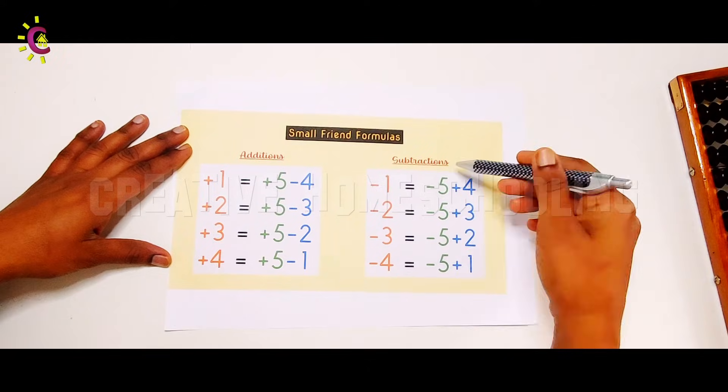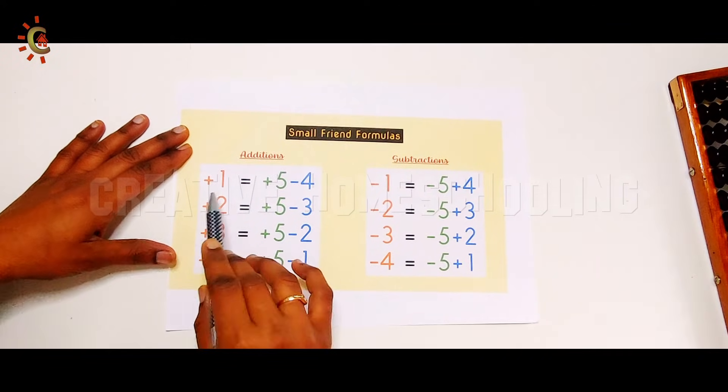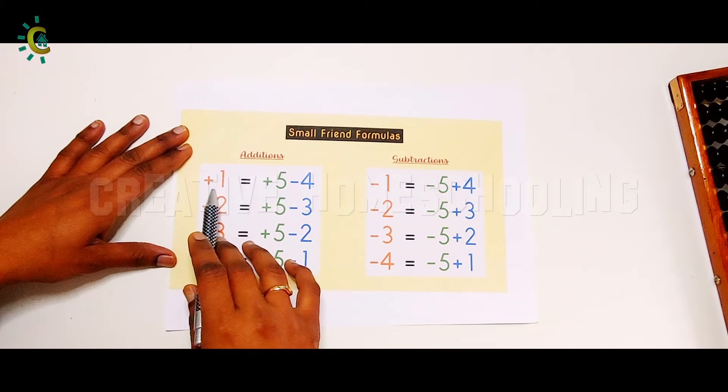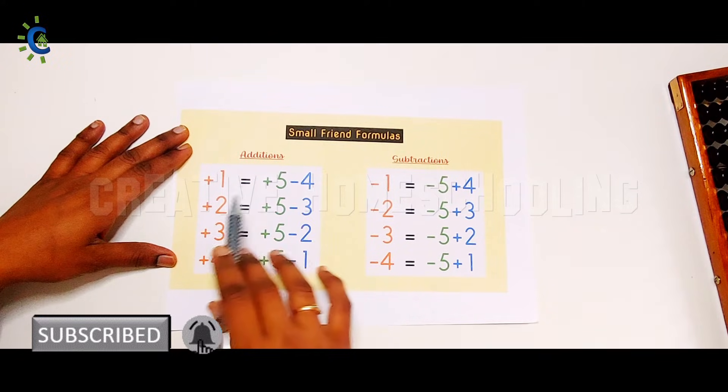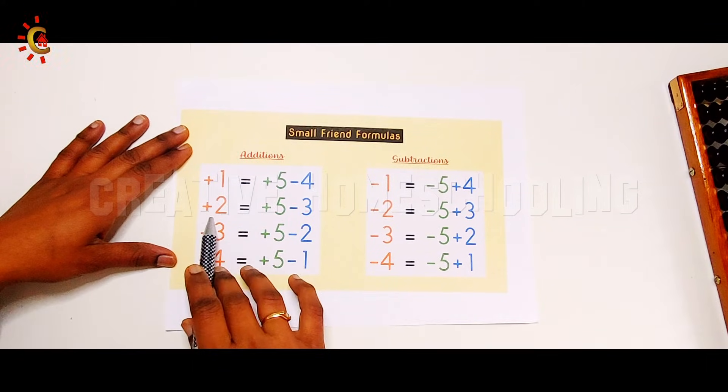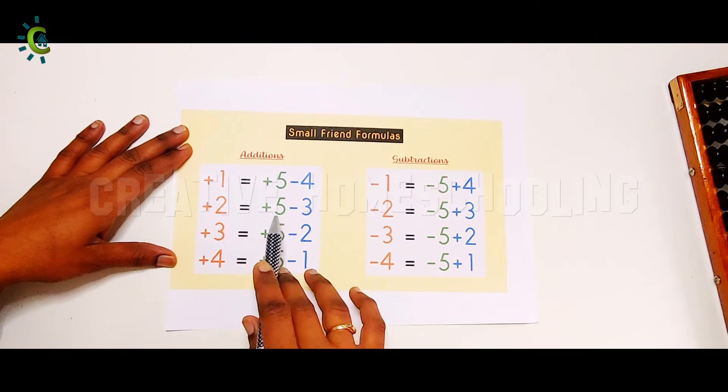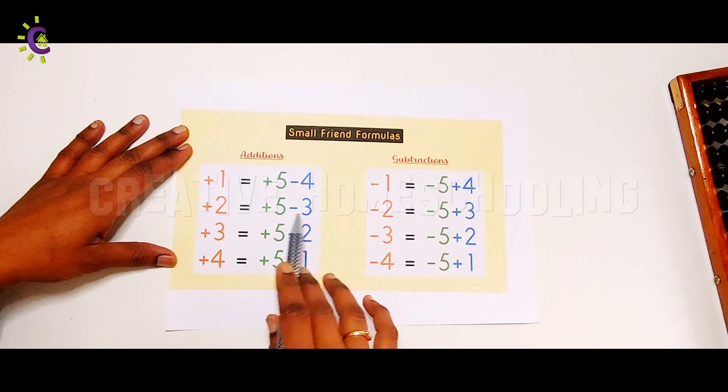To add one bead, use the formula plus 1 equals plus 5 minus 4. To add two beads, we must use the formula plus 2 equals plus 5 minus 3.